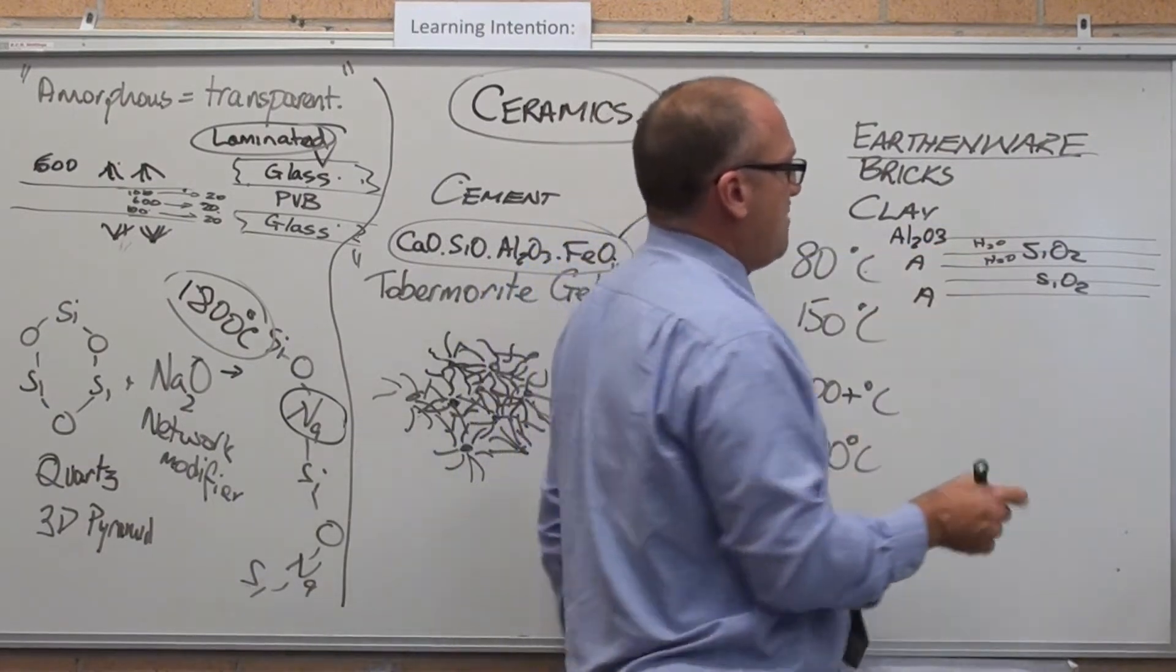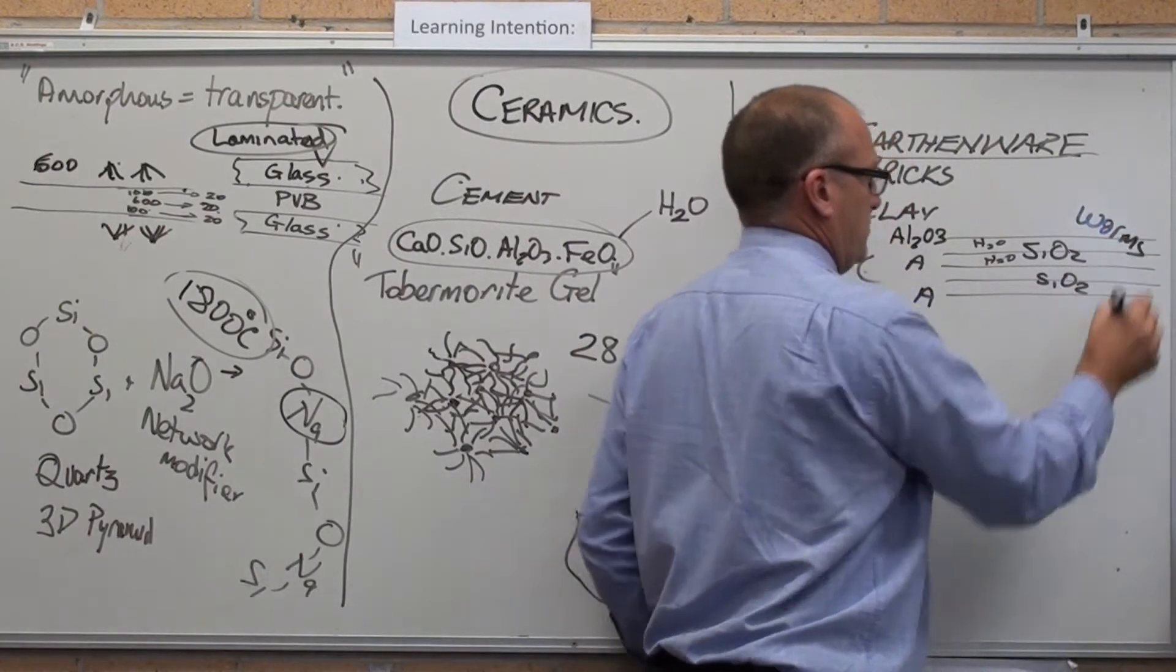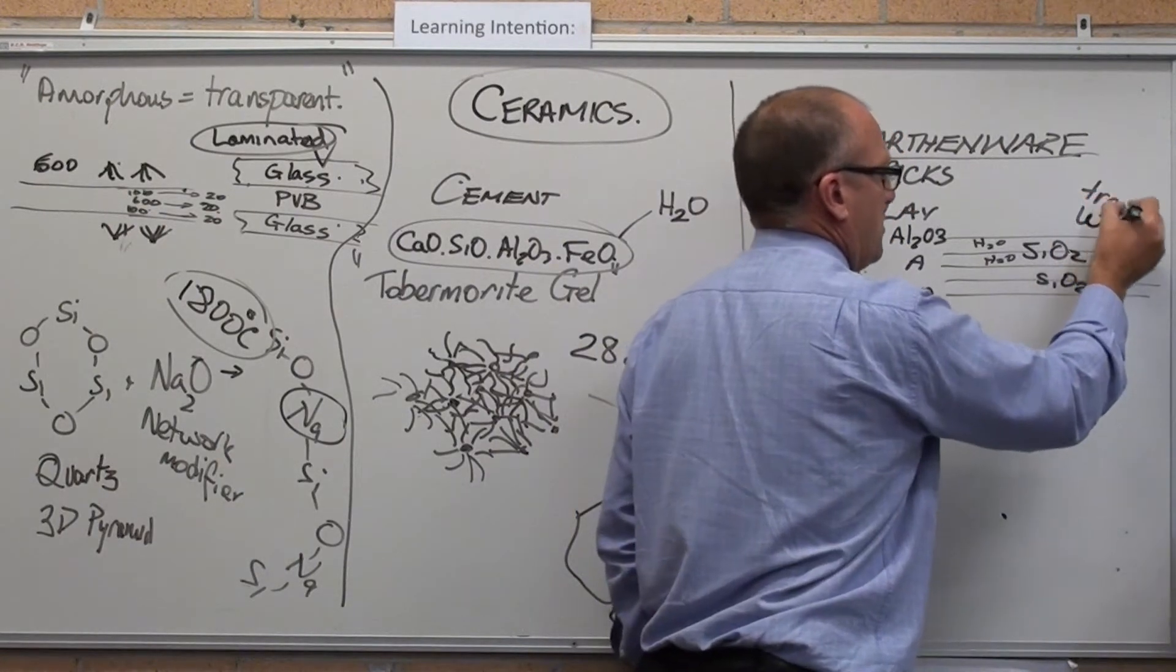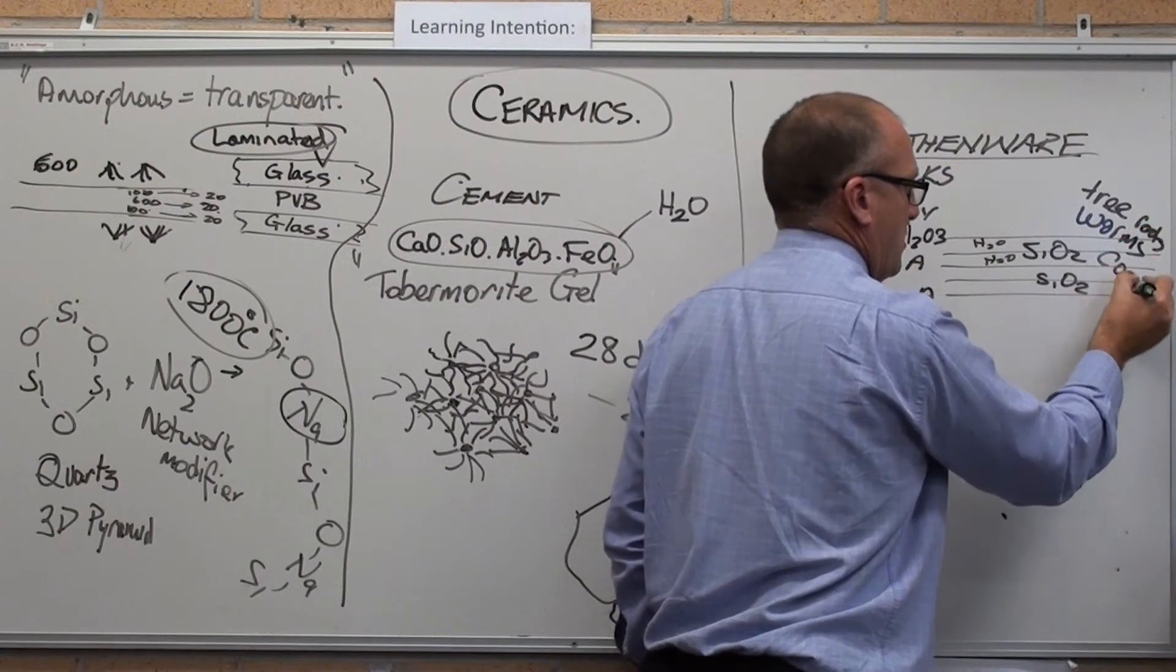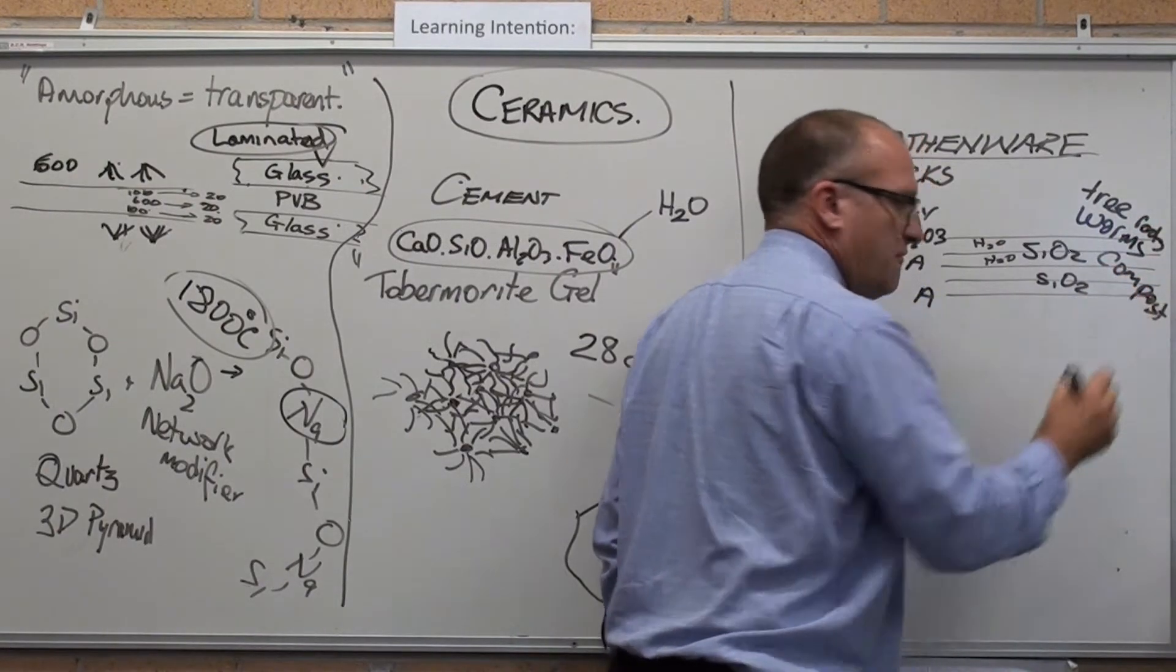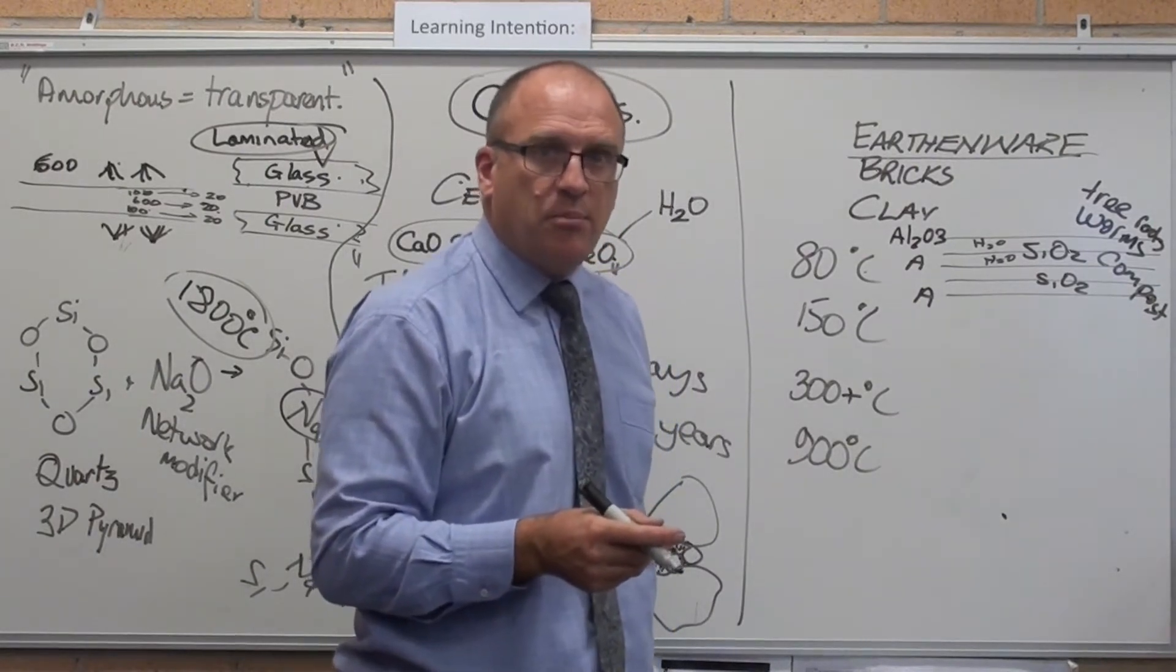So, in here as well, it's earthenware. We've got worms. We've got tree roots. We've got compost and vegetable matter. We dig it out of the ground and turn it into pipes.